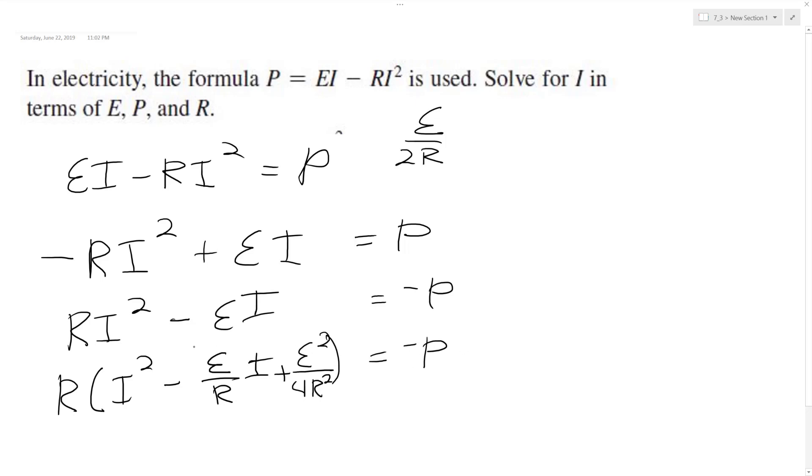So then I'm going to pull this out and then multiply it times R, so I get plus R E squared over 4R squared.